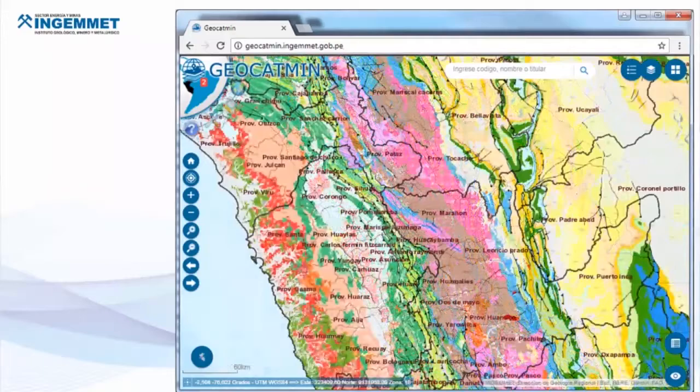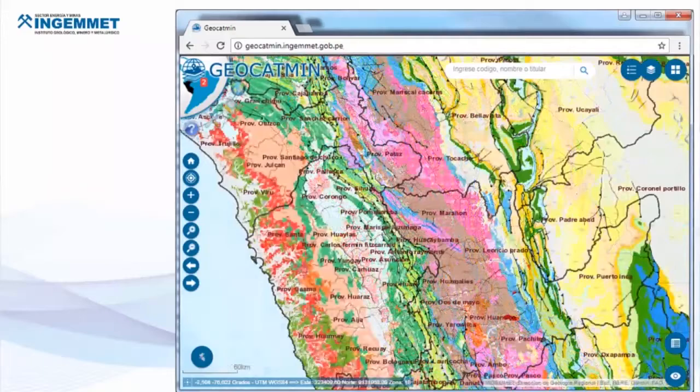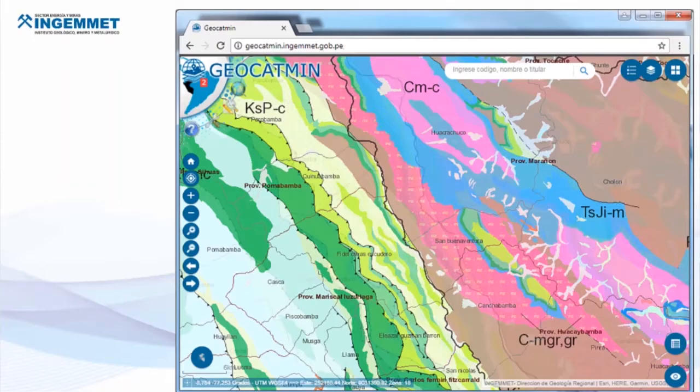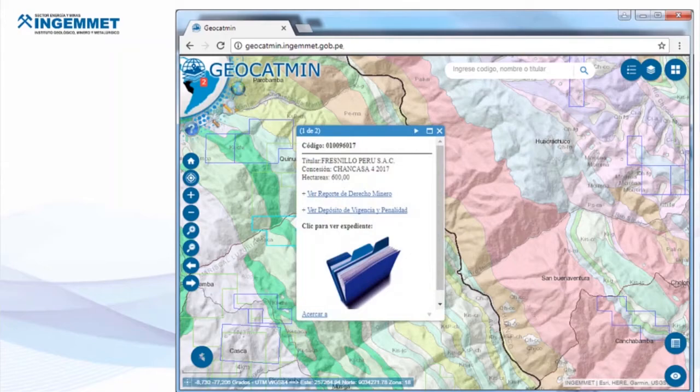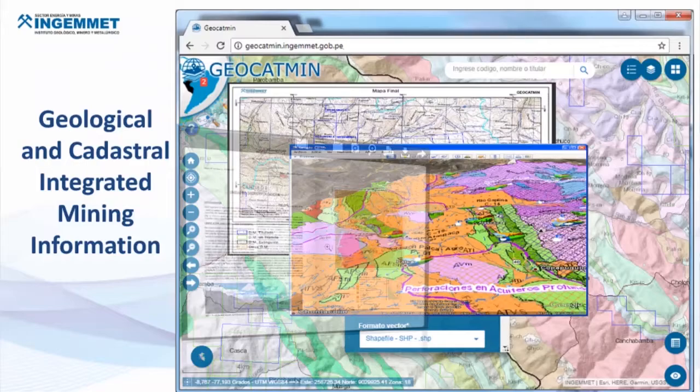GEOCADMAN allows general users to display all maps at a national level, at diverse scales and areas of intervention. For instance, we can access the geological chart, mining rights, bulletins, technical reports, and also query the titled mining rights that INGEMET has granted in order to validate the geological information found in these studied areas.